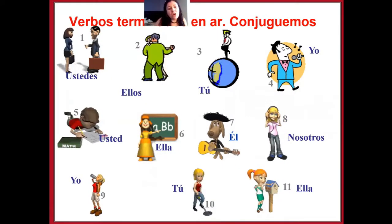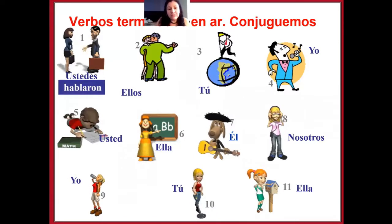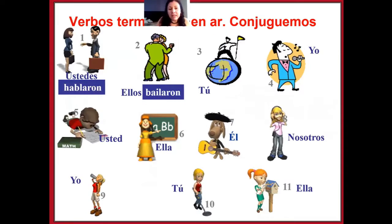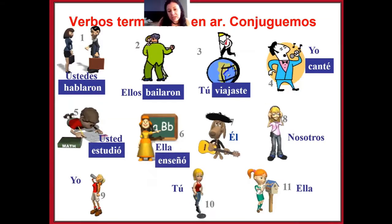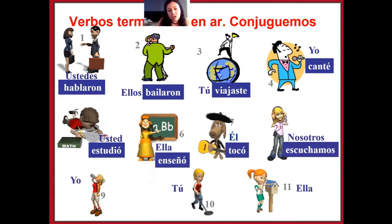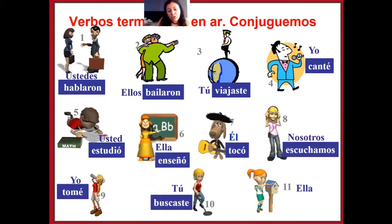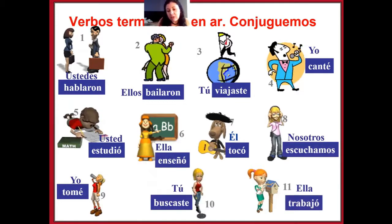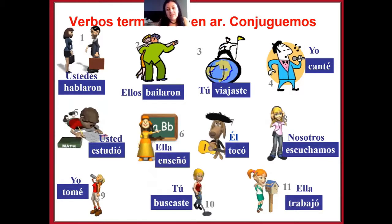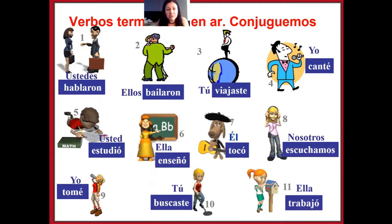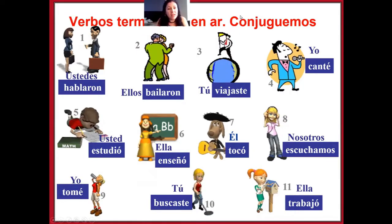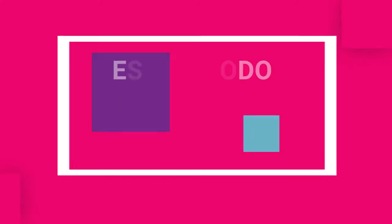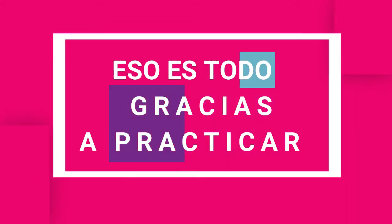So here let's conjugate some examples. Ellos hablaron. Ustedes hablaron, ellos bailaron, tú viajaste, yo canté. Usted estudió, ella enseñó, él tocó la guitarra, nosotros escuchamos, yo tomé agua, tú buscaste trabajo, tú buscaste algo perdido, ella trabajó. These are some conjugaciones of the verbs, and I hope you practice them on My Spanish Lab — more in-depth and different types of exercises. The exercises on My Spanish Lab are already posted, so let's finish the explanation here and start accomplishing our goal of narrating and talking about events that happened in the past.